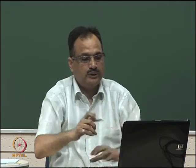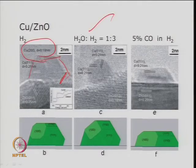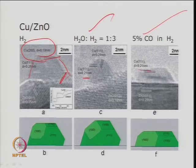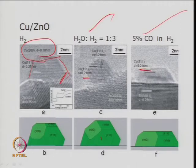When you treat the catalyst with hydrogen and water, or with carbon monoxide, the morphology changes. The particle spacing changes: 0.18 nm becomes 0.21 nm under different conditions, and the structure (edges) changes correspondingly. TEM can thus provide information about changes in structure, crystal size, and crystal composition. A wide variety of information can be obtained through transmission electron microscopy.